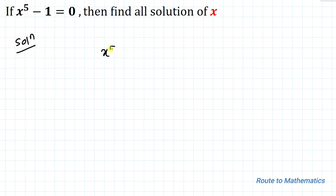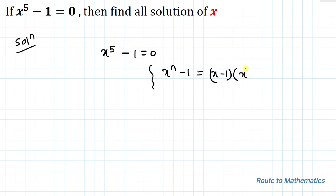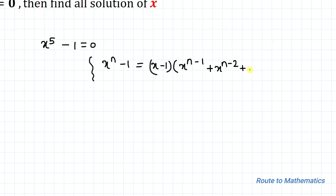We have given x to the power 5 minus 1 equals to 0. We have a formula: x to the power n minus 1 can be factorized into x minus 1, multiplied with x to the power n minus 1 plus x to the power n minus 2, plus the series going up to plus 1, that is x to the power 0. This formula is applicable only when n is a positive integer, and here n equals 5.